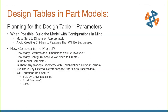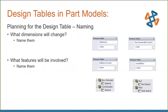Some general principles when working with design tables: dimension appropriately, and try to avoid creating children to features that are going to be suppressed. Consider how complex your model is and whether equations will be involved. It's always a good idea to name your sketches and features — otherwise you'll be stuck figuring out what 'D1' or 'Sketch1' means. Rename them to something meaningful like 'pipe diameter' or 'rod sketch.' In the feature tree, do a slow left-click or press F2 to rename any feature.